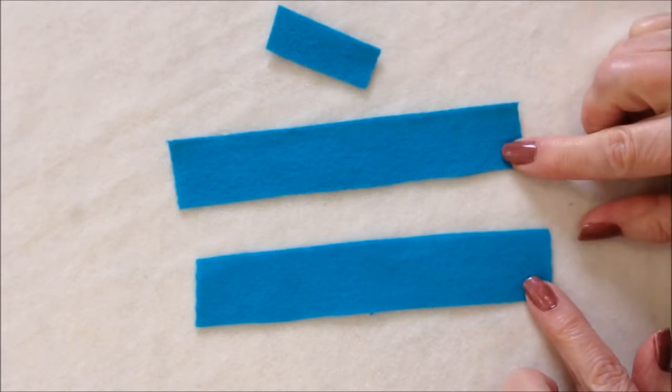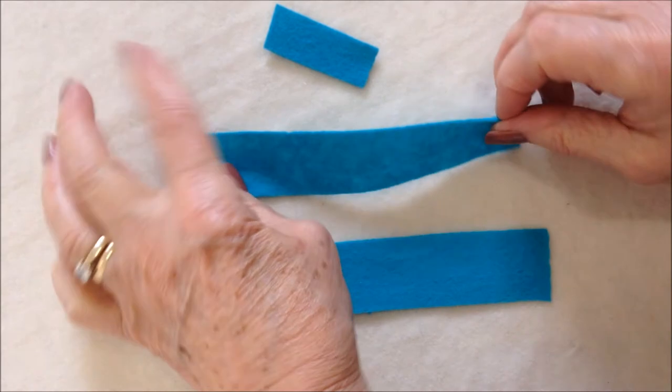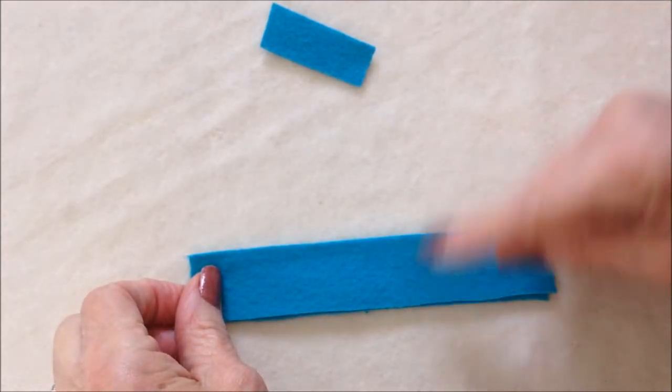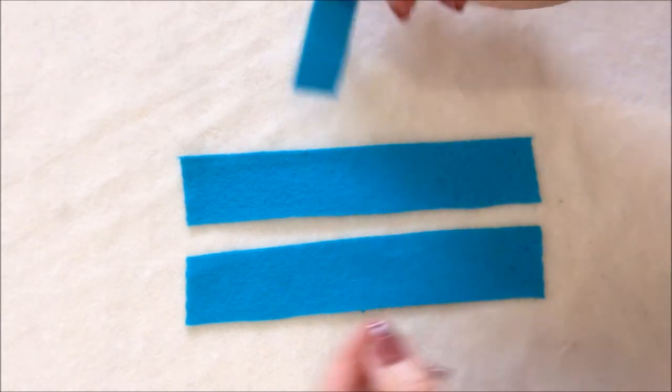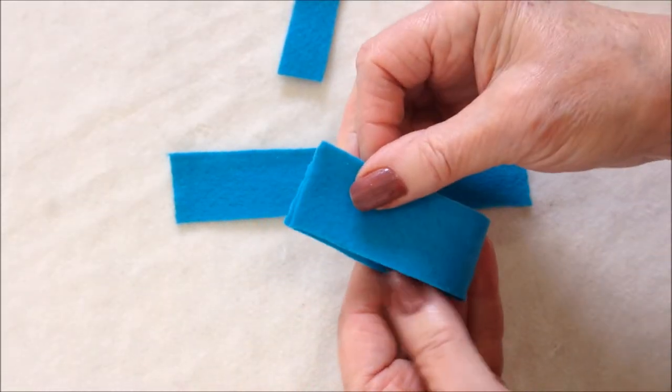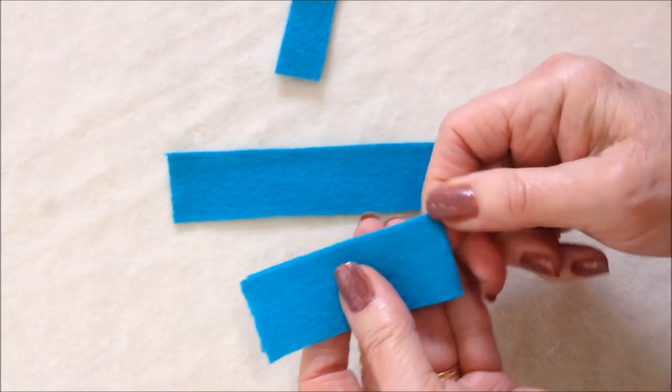To make an easy felt bow, cut two strips of fabric the same width, and then a smaller piece to wrap around. Fold this over like this and pinch it to mark it, or you can add a pin.